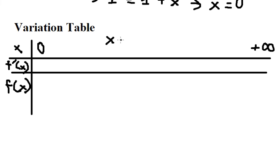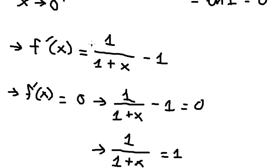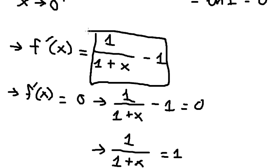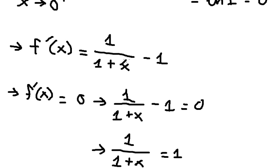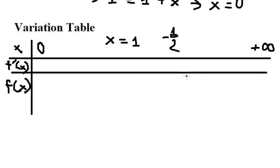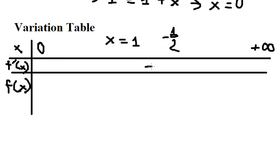So I will choose x equals to 1 and put it in here. We get 1 over (1 + 1) minus 1, which is 1 over 2 minus 1, giving negative 1 over 2. So negative 1 over 2 is negative, meaning the sign of the first derivative is negative.